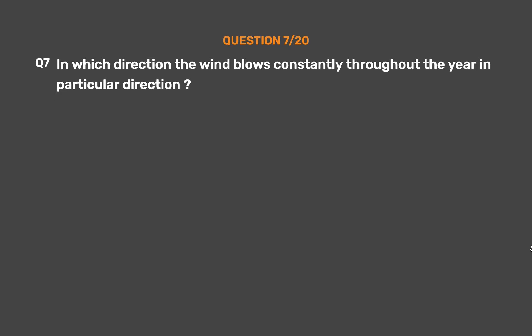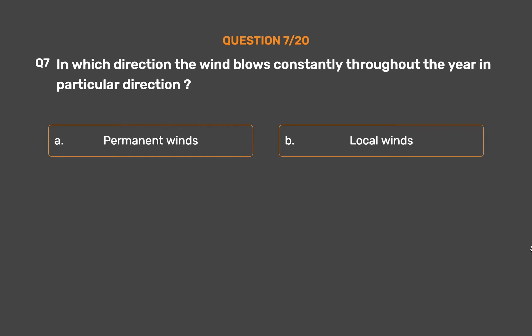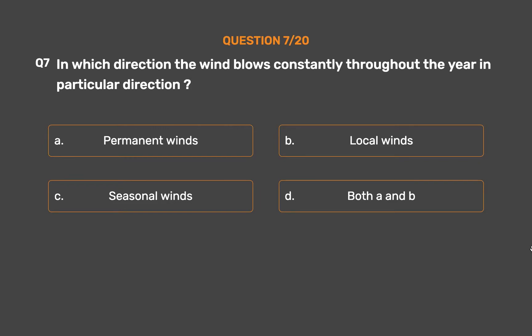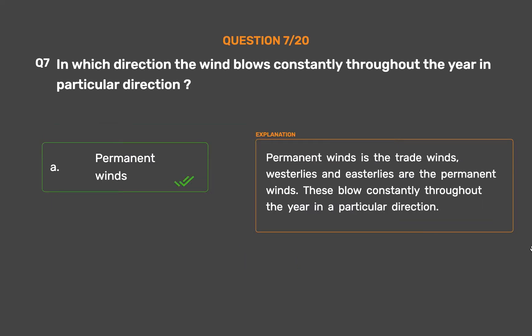Question number 7: Which wind blows constantly throughout the year in a particular direction? Option A: Permanent winds. Option B: Local winds. Option C: Seasonal winds. Option D: Both A and B. The correct answer is Option A, Permanent winds. Permanent winds include trade winds, westerlies, and easterlies. These blow constantly throughout the year in a particular direction.